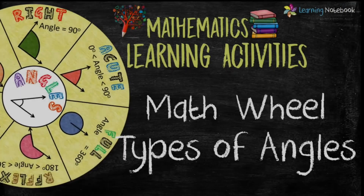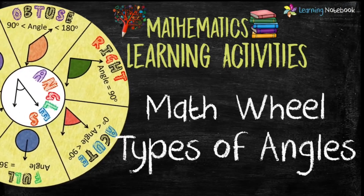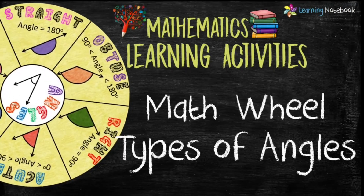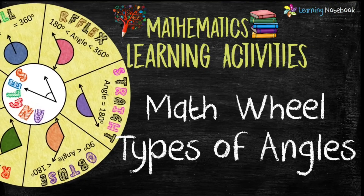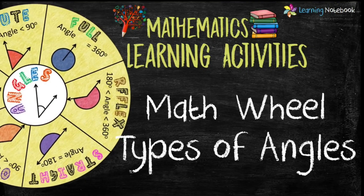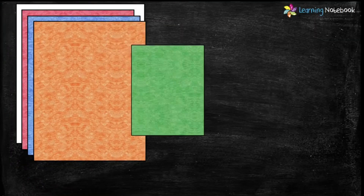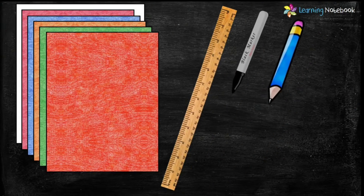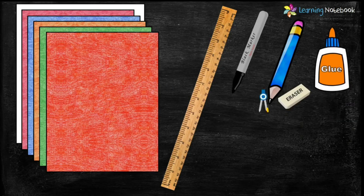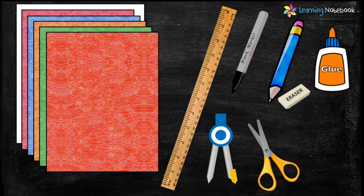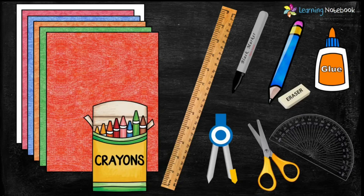Hello students, welcome to our channel Learning Notebook. It is always fun to learn math through activities. In this video we will learn types of angles by making a math wheel. For this activity we need one A3 white sheet, few colorful A4 sheets, a ruler, a black marker pen, a pencil, an eraser, glue, a compass, a pair of scissors, a protractor, and a box of crayons.